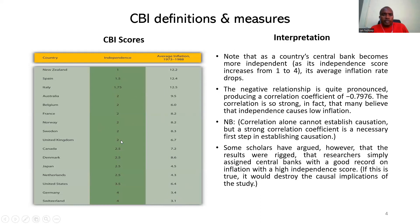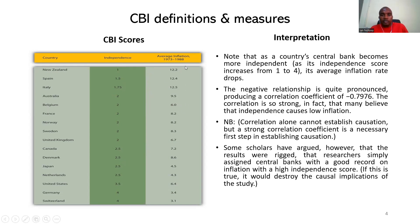When we look at these figures and plot them on a scatter diagram, we note that as a country's central bank becomes more independent — as its score increases from 1 to 4 — the average inflation rate decreases. The negative relationship is quite pronounced, producing a correlation coefficient of minus 0.7976, which is almost minus 0.8. The correlation is so strong that some believe that central bank independence actually causes low inflation.